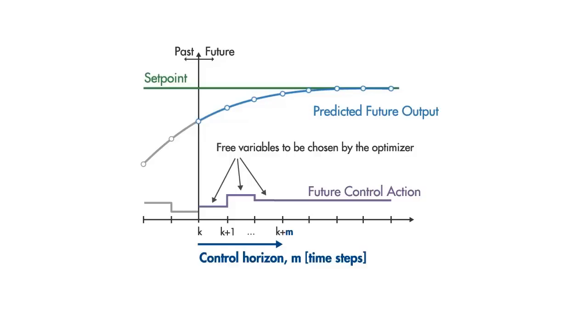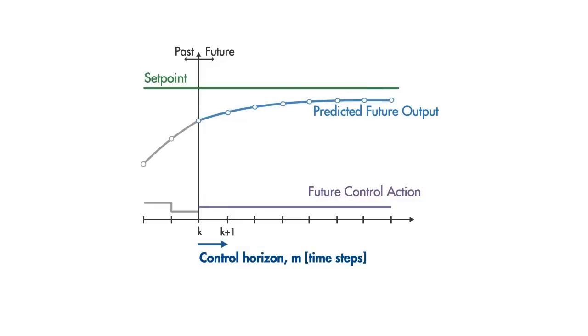So the smaller the control horizon, the fewer the computations. Why don't we always choose a control horizon of 1 then? We can, but it might not give us the best possible maneuver.